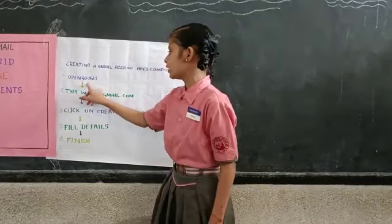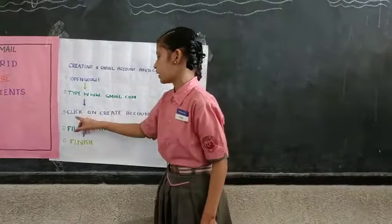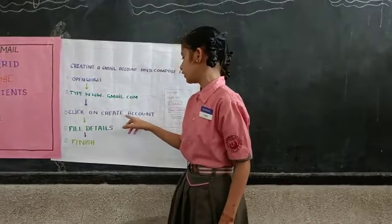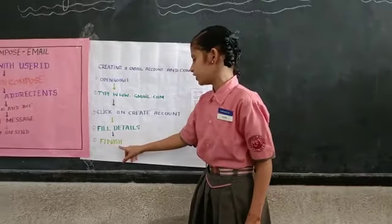Step 1, open Google. Step 2, type www.gmail.com. Step 3, click on create a link. Step 4, fill details. And finally, we can finish.